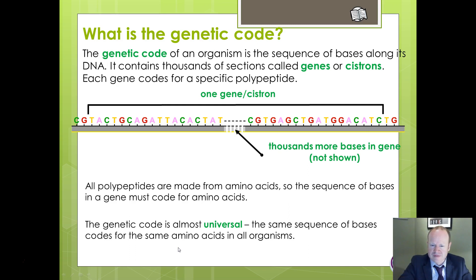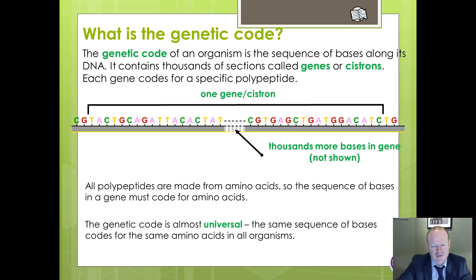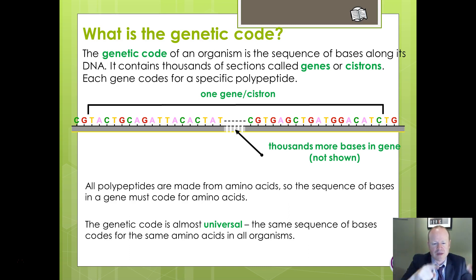Now, the genetic code. Genes, sometimes referred to as cistrons, are the things that code for a specific polypeptide — in other words, a specific sequence of amino acids that makes up part of a protein. Polypeptides are made from amino acids, so we need a sequence of code to say which order we put those amino acids in place. The genetic code is described as universal — the sequence of bases is the same for any organism. It doesn't matter whether it's in a cat, a rat, or a human: that particular sequence of bases will code for that particular amino acid.